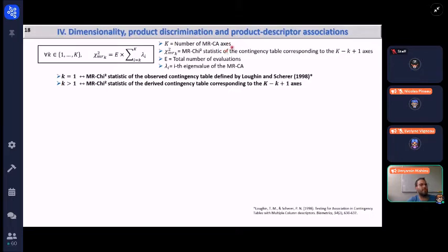With K being the number of the MRCA axis, which stands for multiple response correspondence analysis, which is the dimensionality of the full space. Here is the chi-square statistic of the contingency table corresponding to the last axis of the correspondence analysis. K is the total number of evaluations, and lambda K is the eigenvalues of the MRCA. And when we set K equal 1, we end up with the MRCA chi-square statistic of the observed contingency table, which is the basis of this work. And when you set K larger than 1, you end up with the multiple response chi-square statistic of the contingency table corresponding to the rank K minus little K plus 1 axis.